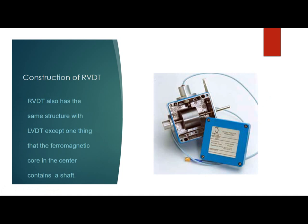In the construction of RVDT, RVDT has the same basic structure as LVDT. The first thing that is different is the coil: the coil inside LVDT is an iron core, while the coil inside RVDT is a ferromagnetic core in a central container shape.